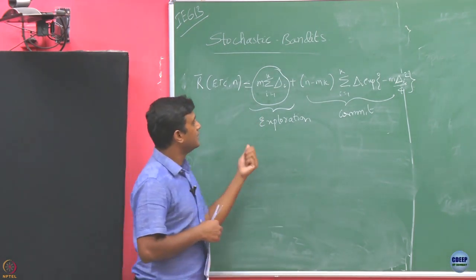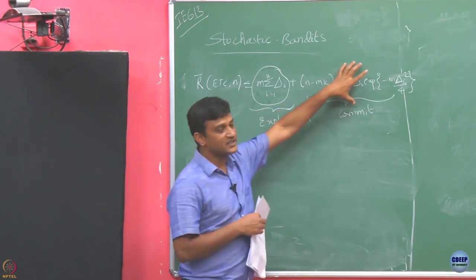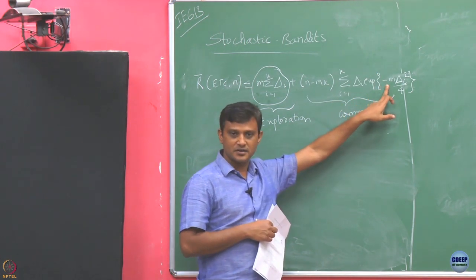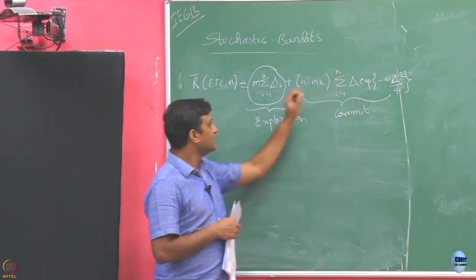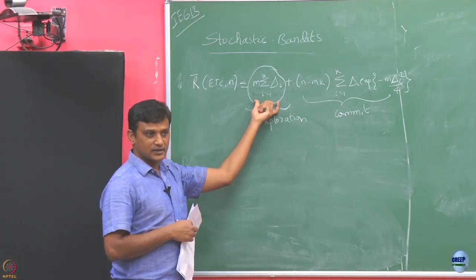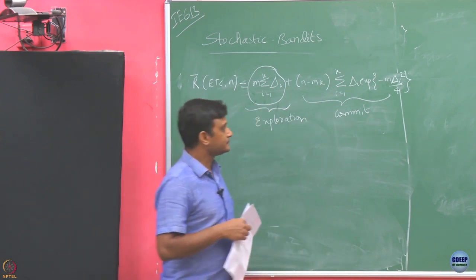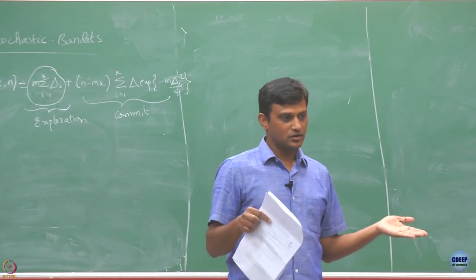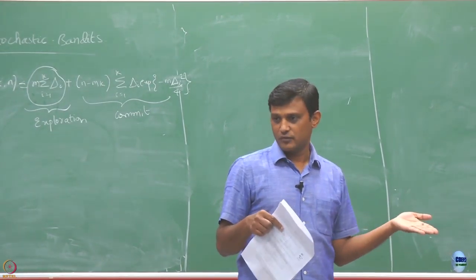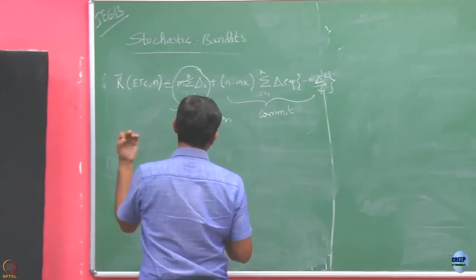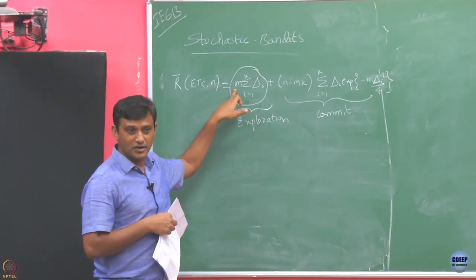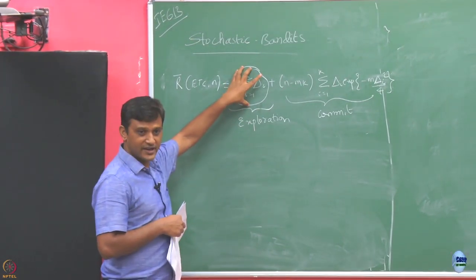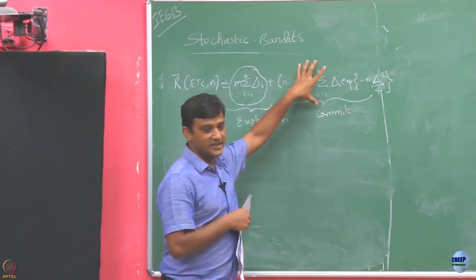On the other hand, if you want to make this guy small, the only way you can make this small is to make m large. If you are going to make m large, then this guy is going to take a hit — the regret you are going to incur in the exploration phase. So we have to balance this: how much resource to put in exploration versus exploitation. Then how are you going to choose m? If I increase m, this guy takes a hit. If I decrease m, this guy takes a hit.